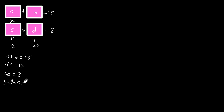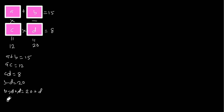So from this equation I'm going to make B the subject. We have B minus D plus D is equal to 20 plus D, so the D's cancel and we have B is equal to 20 plus D. I'm going to call this equation one.